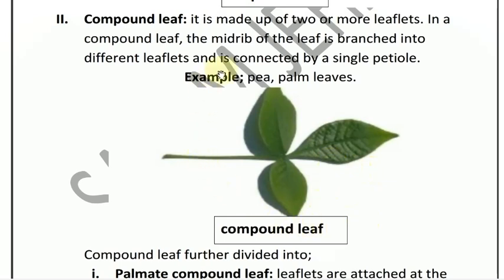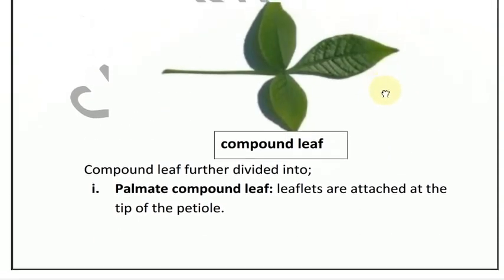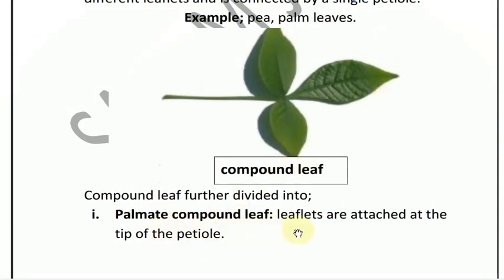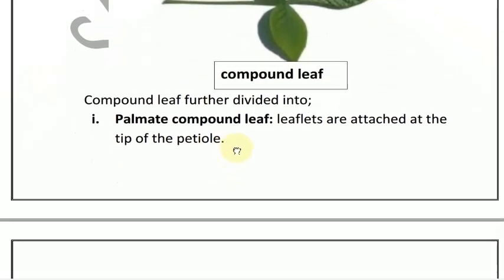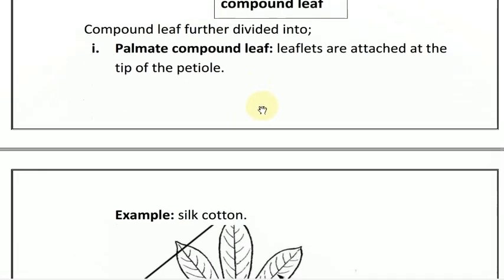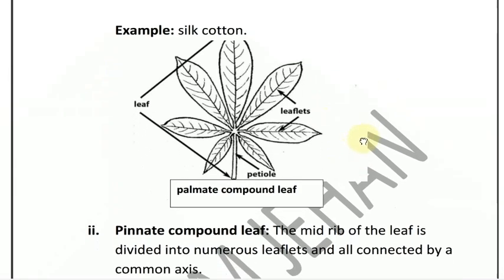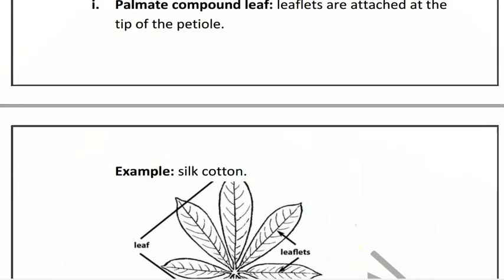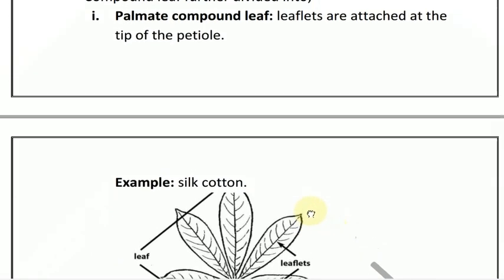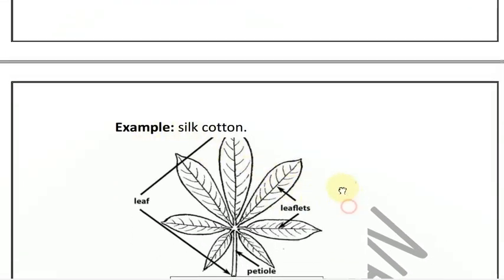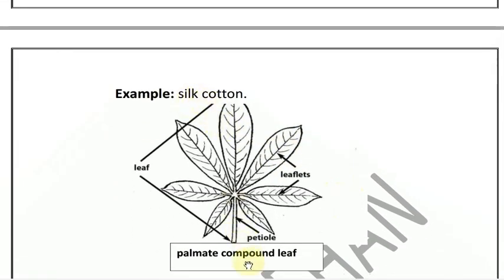Compound leaves are further divided into two types: palmate compound leaf and pinnate compound leaf. In palmate compound leaf, the leaflets are at the tip of the petiole, as shown in the diagram. Example is silk cotton. The leaflets are at the tip of the petiole. See the diagram for the leaf structure.